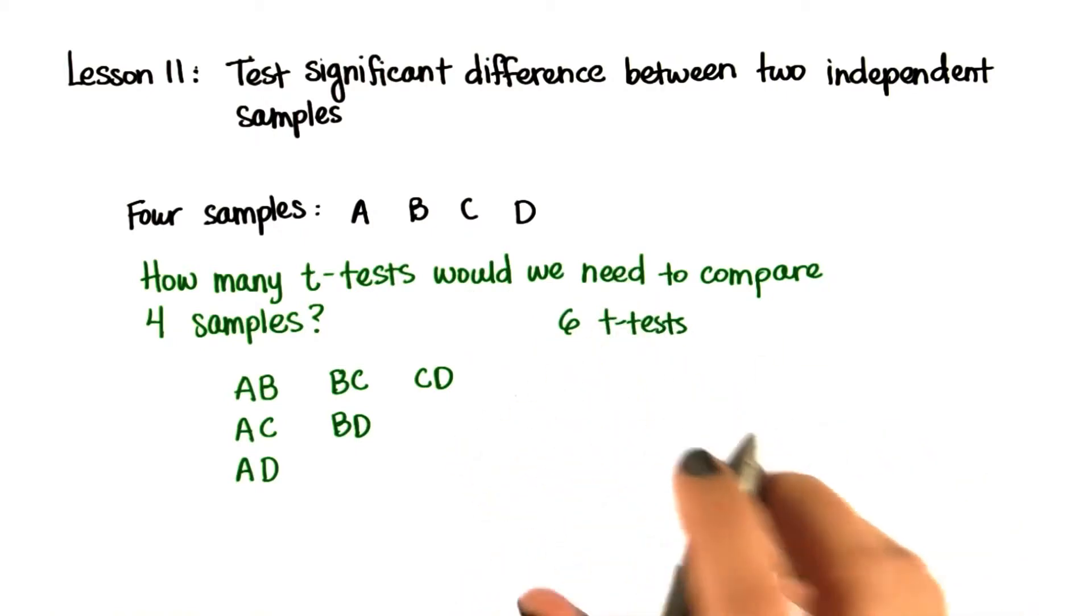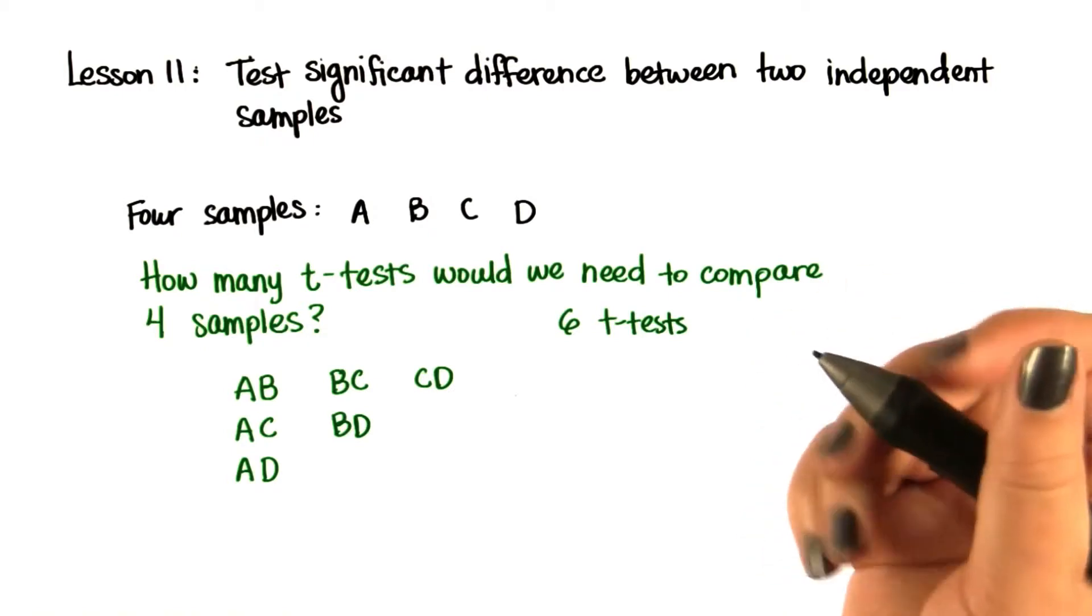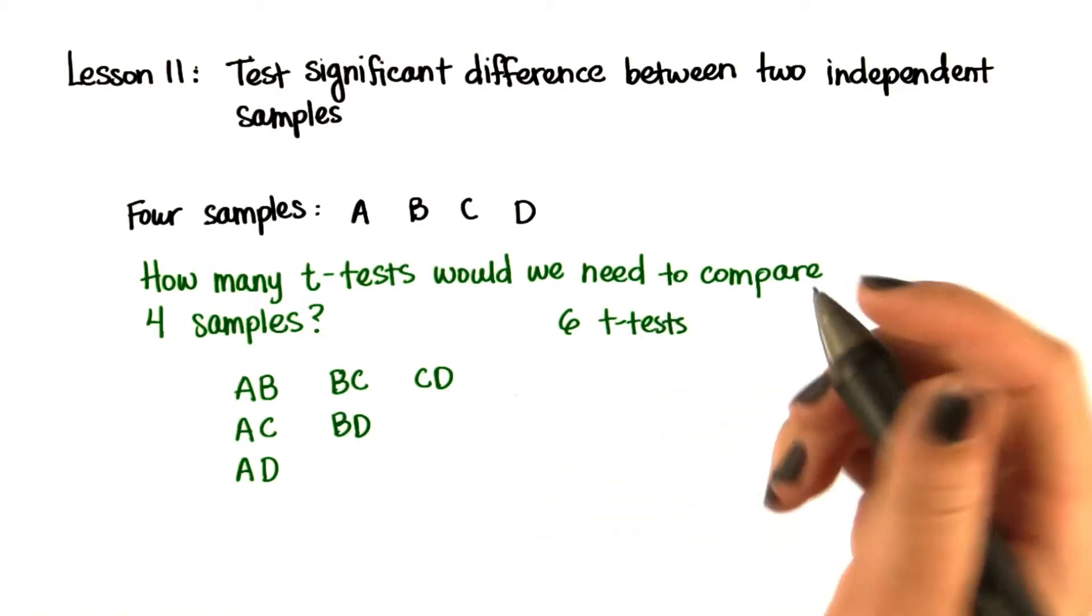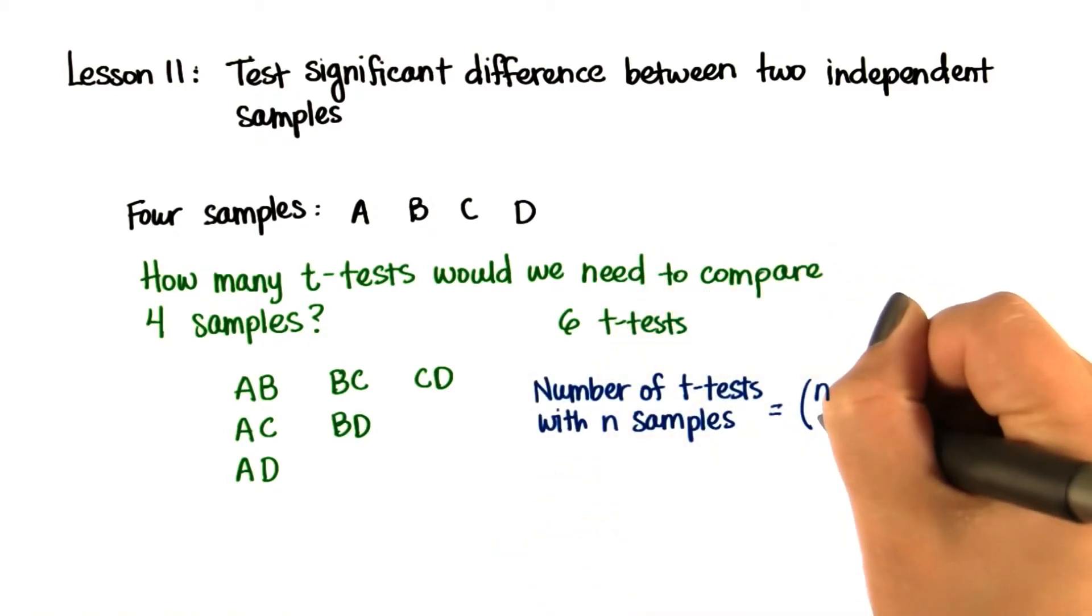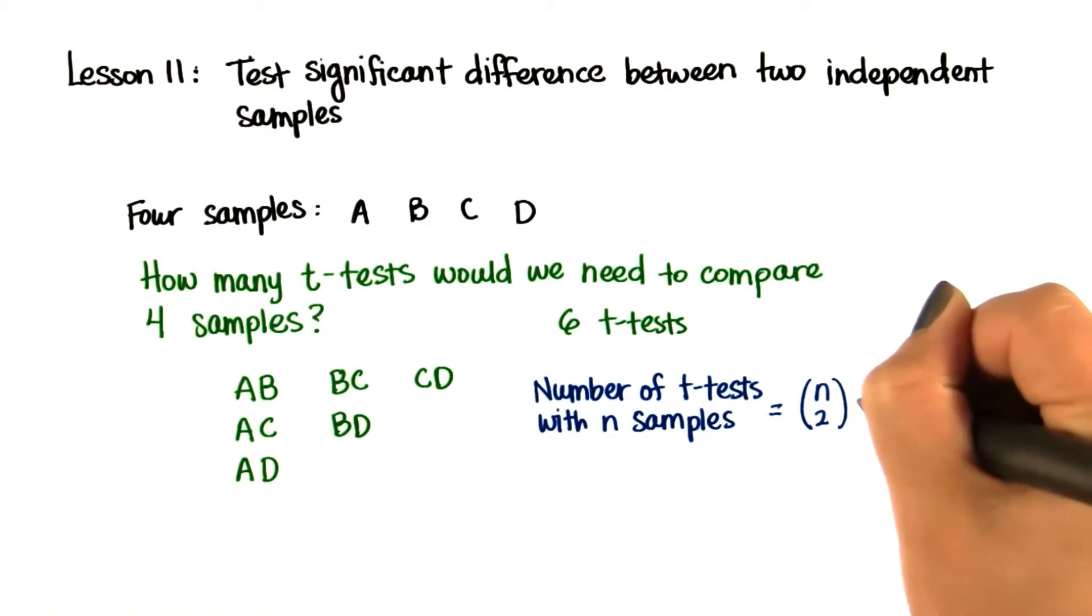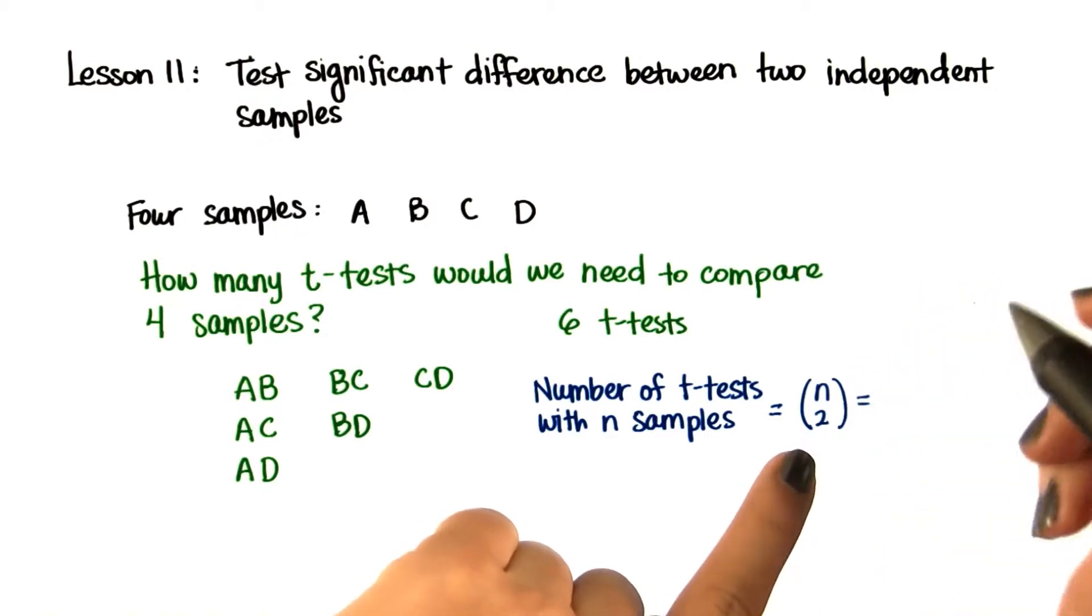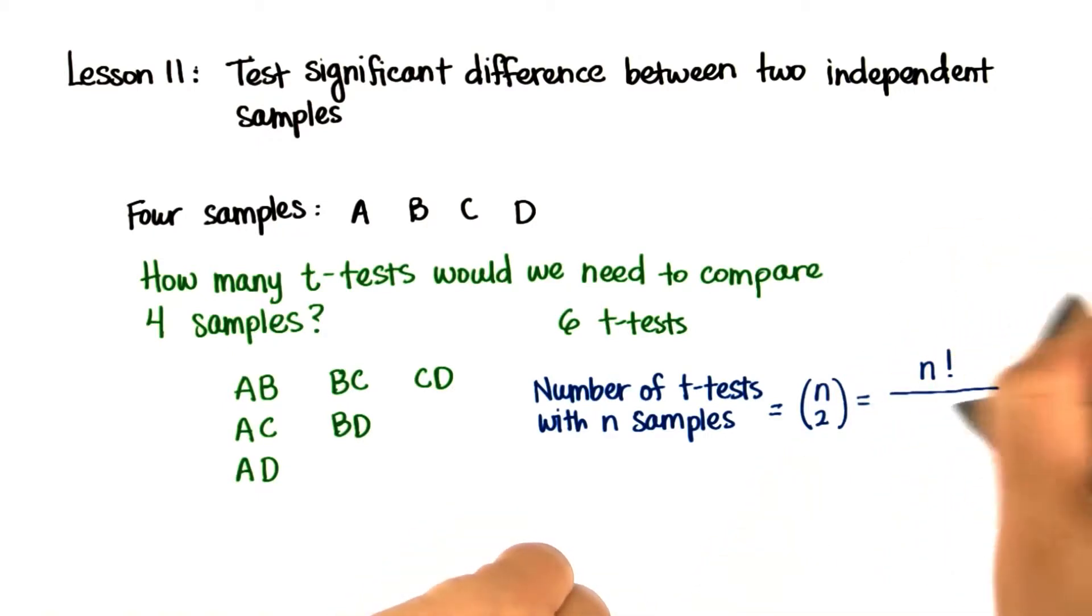You don't have to know this, but the way to figure out how many t-tests we would have to do with n samples is found by choosing 2 out of n. This is the symbolic notation for that, which is equal to n factorial divided by 2 factorial times n minus 2 factorial.